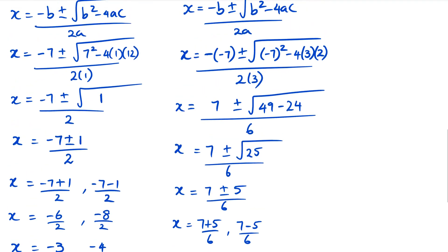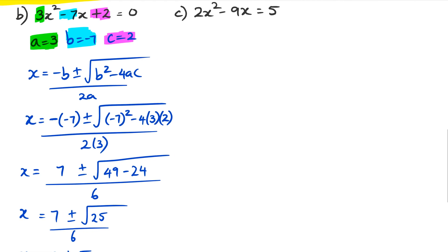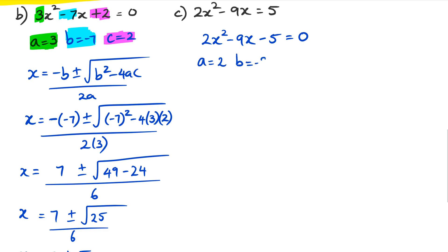For the last question, sometimes it's not straightforward — you'll need to rearrange the quadratic first. In this case we rearrange our equation to two x squared minus nine x minus five equals zero. Once we do that, we work out our values: a is two, b is negative nine, and c is negative five. My a value is the coefficient of x squared, my b value is negative nine as the coefficient of x, and my c value is the constant negative five.